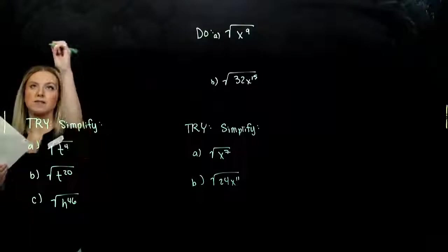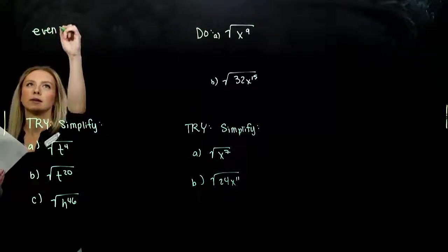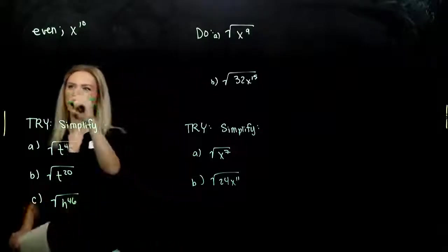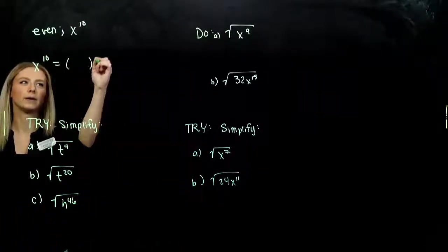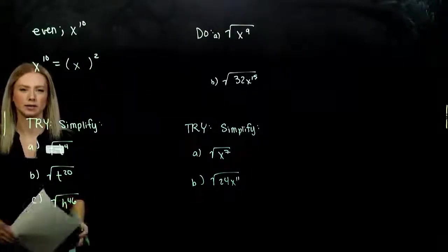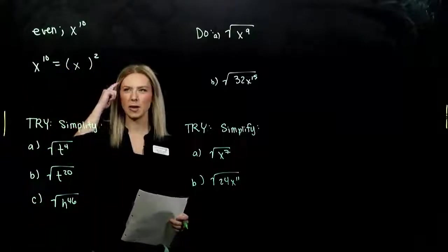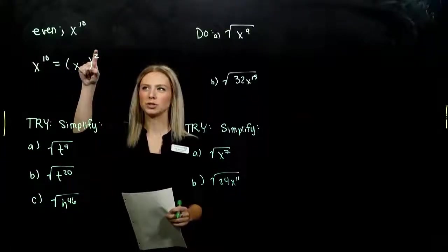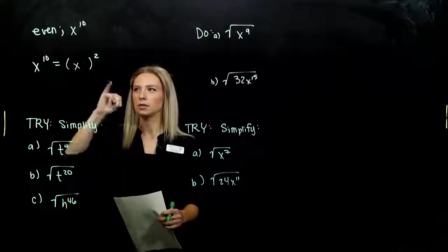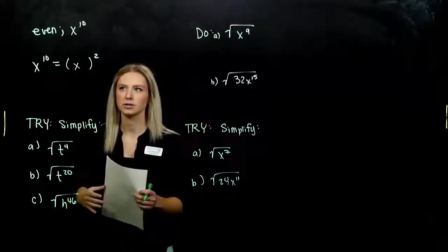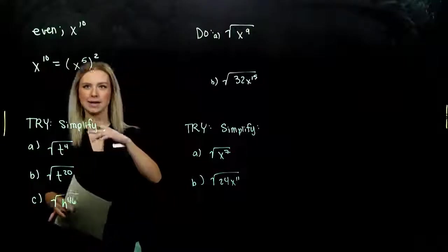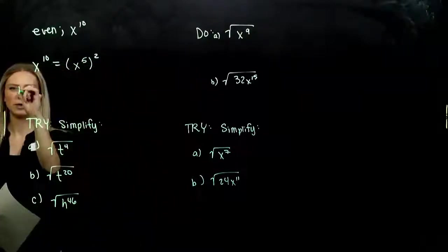To take the square root of an even power, such as x to the tenth, we need to ask: what value do I need to square in order to get x¹⁰? Thinking back to the rules — when I raise a power to a power, I multiply them together. So what value do I need? x to the fifth. If I square that, 5 times 2 gives me 10.